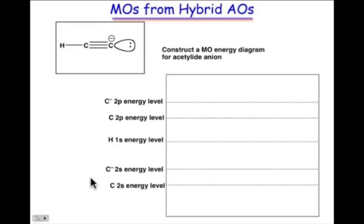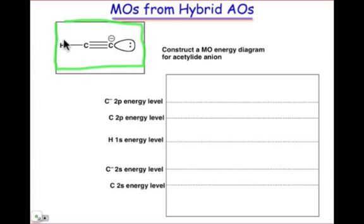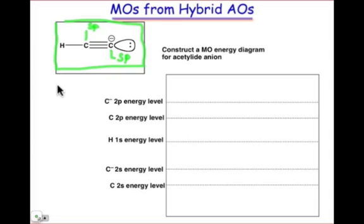Let's use that now to construct the molecular orbital diagram of the acetylate anion. The acetylate anion has a carbon-hydrogen sigma bond, and that carbon atom is sp hybridized. It also has a carbon that bears a formal negative charge, and that carbon is also sp hybridized. There are two electron pair domains for each of those carbons, confirming they're sp hybridized.